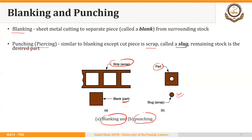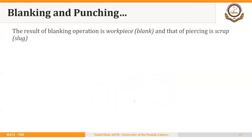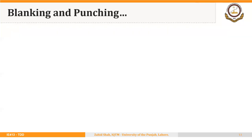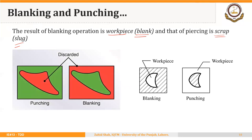The result of the blanking operation is a work piece called the blank, and the result of piercing is scrap also called a slug. The operations appear very similar, but the purpose is different. If whatever we are removing is the required part and what remains is discarded or scrapped, then the operation is called blanking.